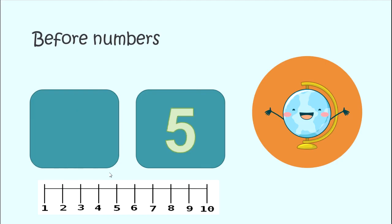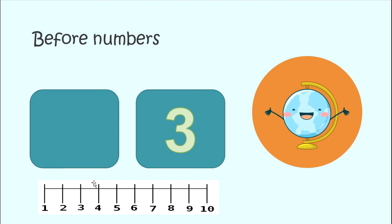All right — 5. What number comes before 5? Let's find 5 on our number line. What number is in front of 5, or before 5? Did you say 4? Yes — 4 comes in front of 5. Let's try one more before number — 3. What number comes before 3 when we're counting? 1, 2, then 3 — so what number is in front of 3? 2! Yes, 2. Very good!